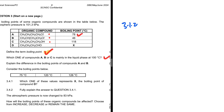Compound A has a boiling point of 78 degrees Celsius, so at 100 degrees Celsius we are above the boiling point of compound A — it is already a gas at 100 degrees Celsius because it boils at 78. The same is true with compound B: compound B has a boiling point of 46 degrees Celsius, so at 100 degrees Celsius it is above its boiling point and has already turned from liquid to gas.